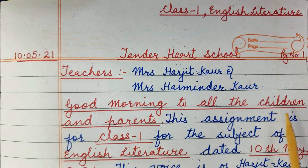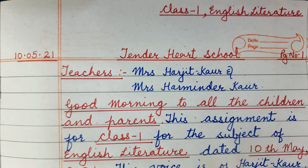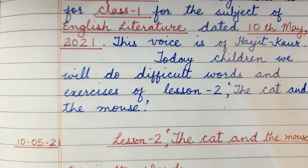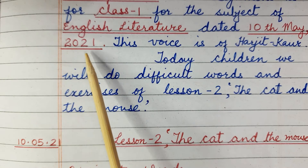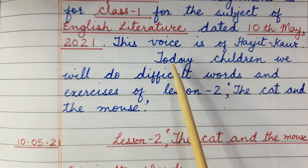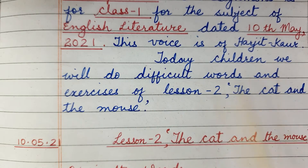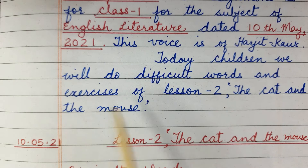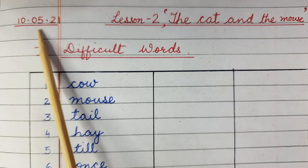Good morning to all the children and parents. This assignment is for Class 1 for the subject of English Literature, dated 10th May 2021. This voice is of Harjit Kaur. Today, children, we will do difficult words and exercises of Lesson 2, The Cat and the Mouse. Children, put the date in your notebook: 10-5-21.